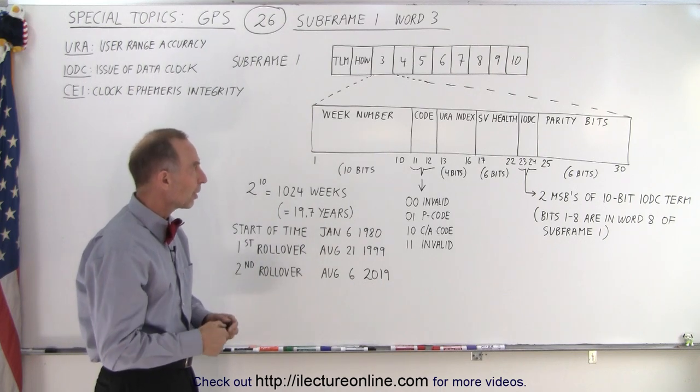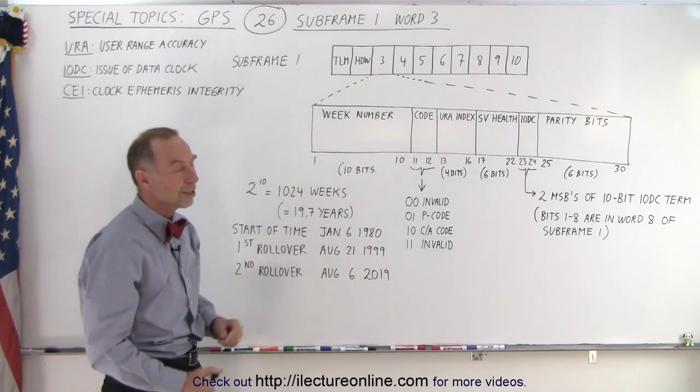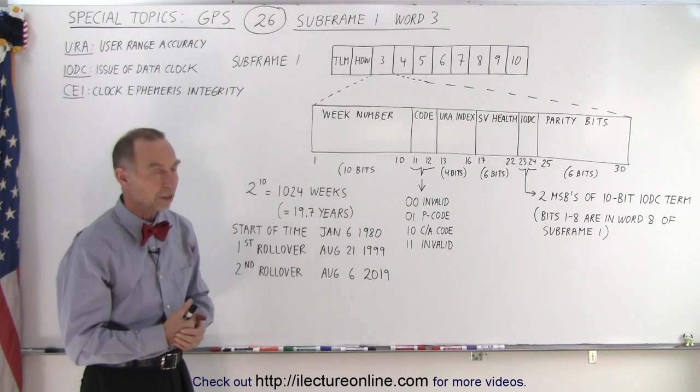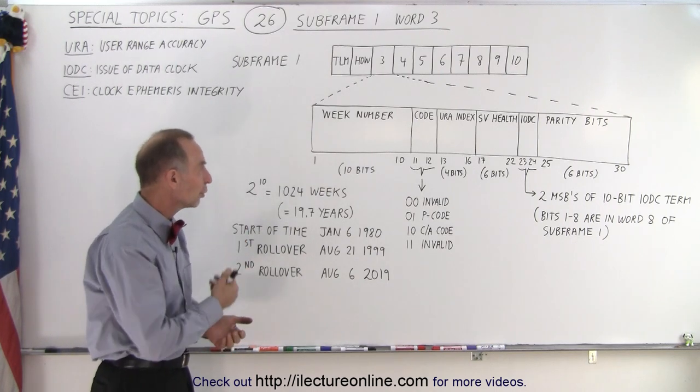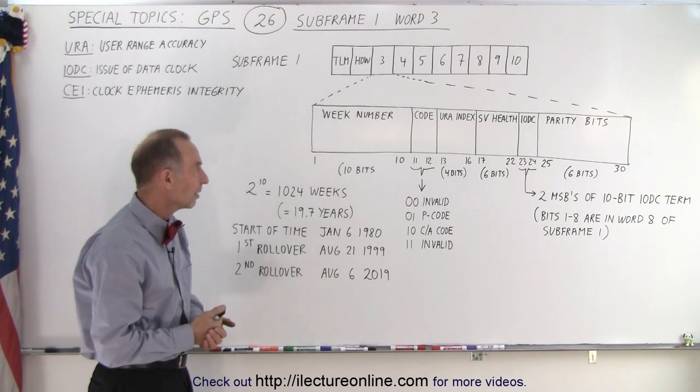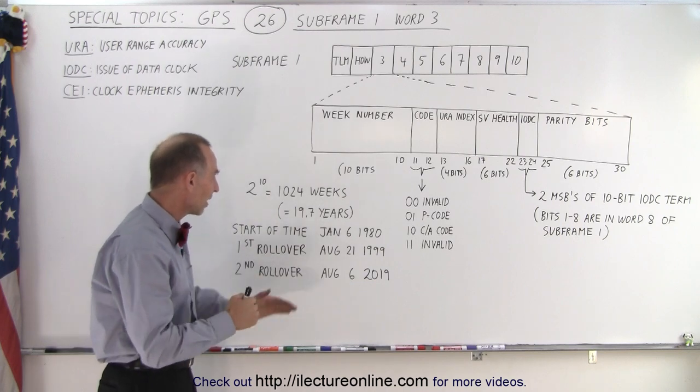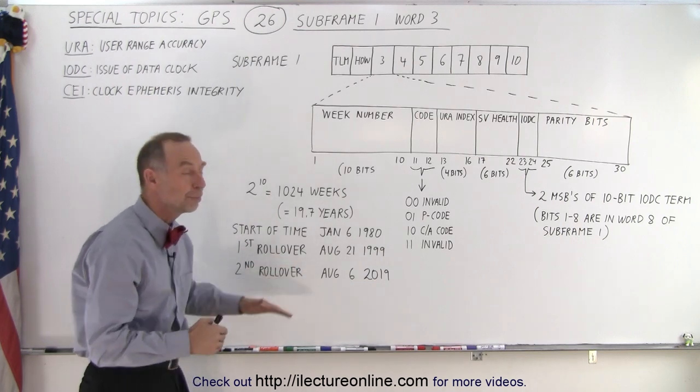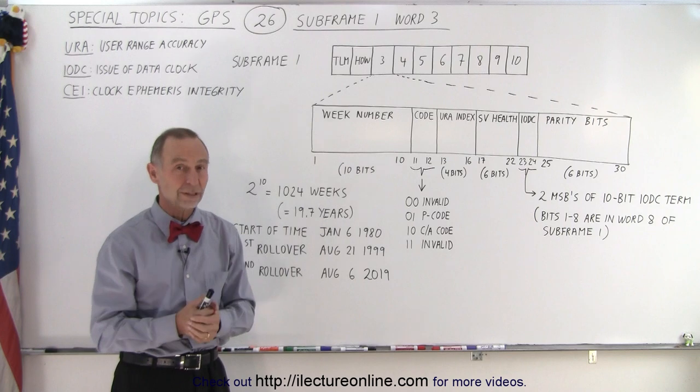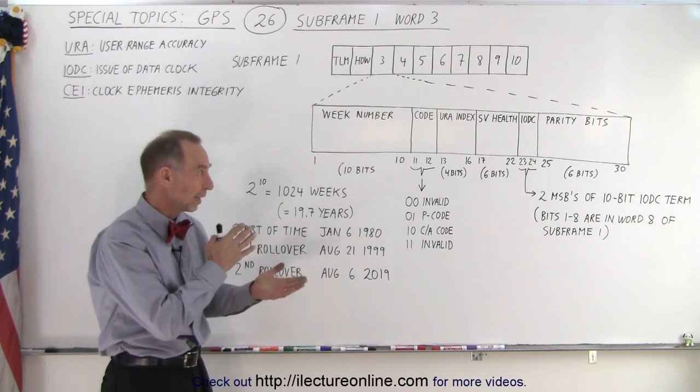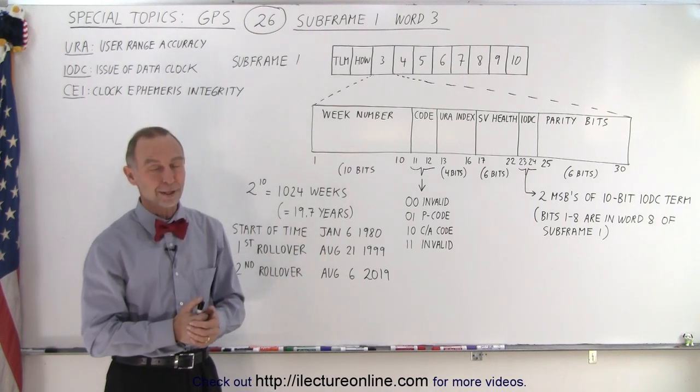The important part of this I would say is the week number. That's something we use on a constant basis and we need to know what week we're in and that is how it's done. It's based on the starting point of a new period of 1024 weeks or almost 20 years worth of weeks. And that's the content of Word 3.